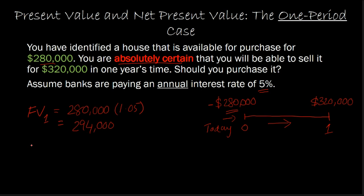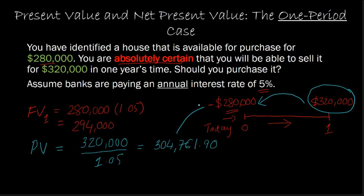The other way of doing it would be to calculate the present value of this $320,000. In other words, how much is this $320,000 worth to me today? So let me take the future value of $320,000 and divide it by 1.05. And when you do that math, you will find that this solves out to $304,761.90. So what you're really saying is in present value terms, the amount that I'm getting from selling the house is like getting $304,761.90 today. That is more than what I am spending today.